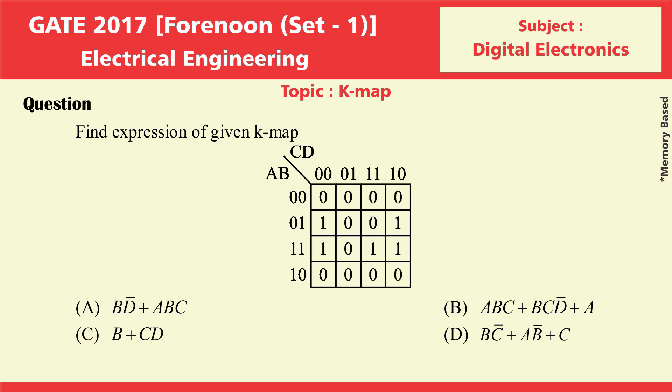Find expression of the given K-map. Option A: B D complement plus A B C. Option B: A B C plus B C D complement plus A. Option C: B plus C D. Option D: B C complement plus A B complement plus C.